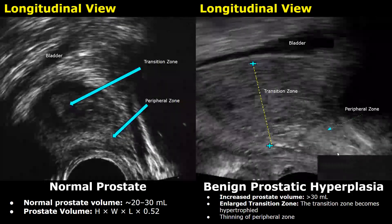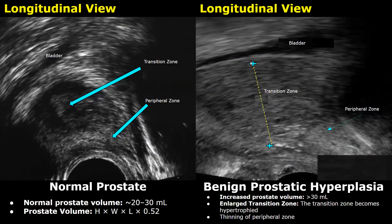This image shows BPH in the longitudinal plane. You can see an enlargement of the hypoechoic transition zone — this entire area is the transition zone of the prostate, and the more echogenic peripheral zone is down here. The prostate gland is enlarged with an increase in size of the transition zone and thinning of the peripheral zone.